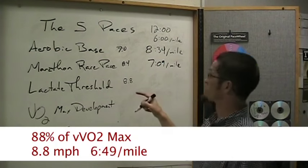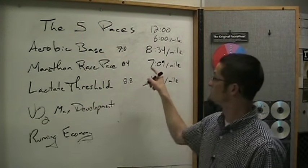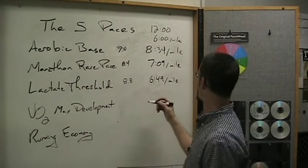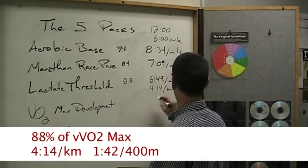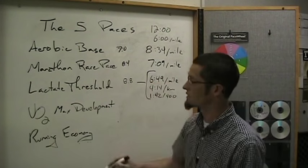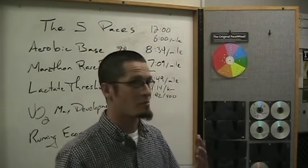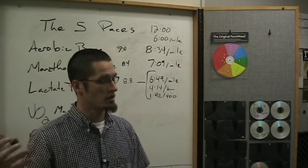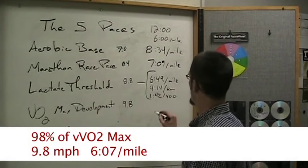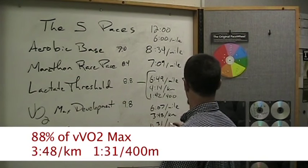Lactate threshold is 8.8 on your treadmill — for a 12-minute 2-miler that's 6:49 per mile. That's only 20 seconds faster than marathon training pace, but it's a full 1:45 per mile faster than aerobic base pace. That breaks down to 4:14 per kilometer or 1:40 per 400-meter lap. The next training pace is VO2 max development, where we're trying to stress the aerobic system to improve the capacity of oxygen-enriched blood carried through the system. At 98%, that's 9.8 miles per hour — 6:07 per mile, or 3:48 per kilometer, or 1:31 per 400-meter lap.